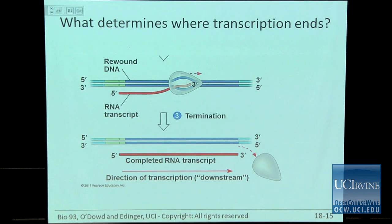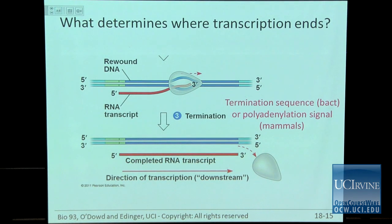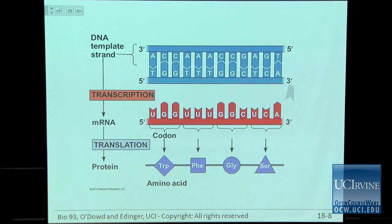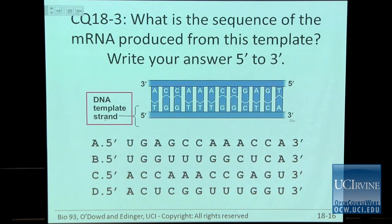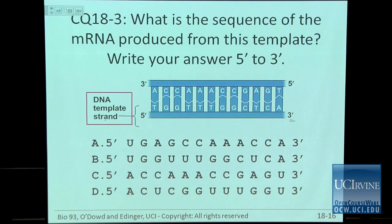Now that we've started transcription, you have to stop it. In bacteria, there's a termination sequence that tells RNA polymerase we're done — get off the gene, stop transcribing. There's a polyadenylation signal in mammals that tells RNA polymerase II it's time to stop transcribing. When given a template strand, write the mRNA sequence 5 prime to 3 prime. By convention, we write mRNA 5 prime to 3 prime, left to right.